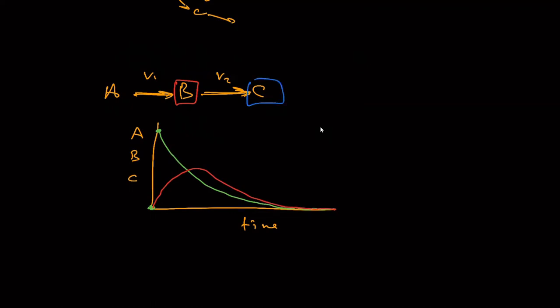And then finally, C, what happens to C? Well, C starts to rise. There may be a little bit, maybe a little kink at the bottom, and it goes up and then reaches a plateau. So we might see some dynamics like that in a simple pathway like this.